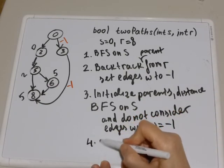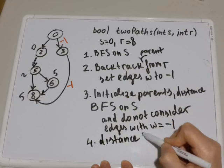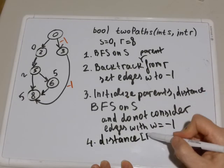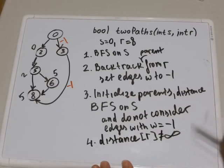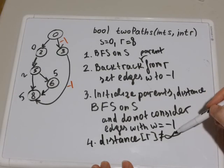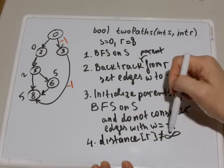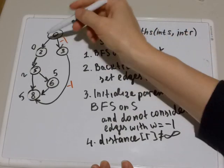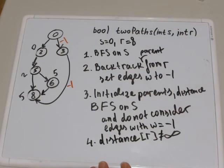And after that you need to check if the distance array at r is not equal to infinity. If it is not equal to infinity—and of course you need to check it after the first BFS too—if it is not equal to infinity, that indeed means we found the second path that is distinct from the first path, and your function can return true after that.